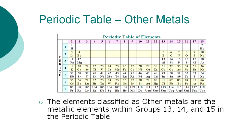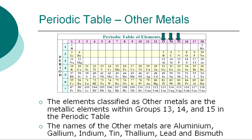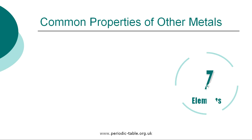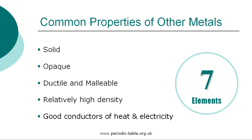The seven elements classified as other metals are the metallic elements within groups 13, 14, and 15 in the periodic table: aluminum, gallium, indium, tin, thallium, lead, and bismuth. The other metals are solid, opaque, ductile, and malleable. They are also good conductors of both electricity and heat and have a relatively high density.